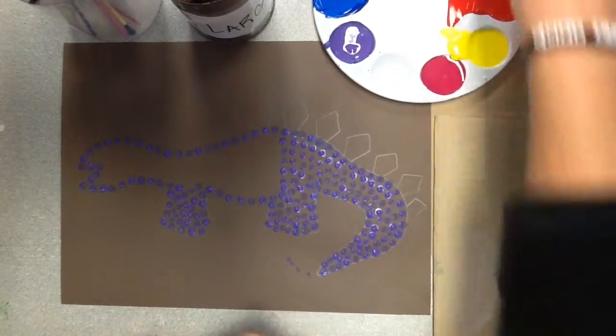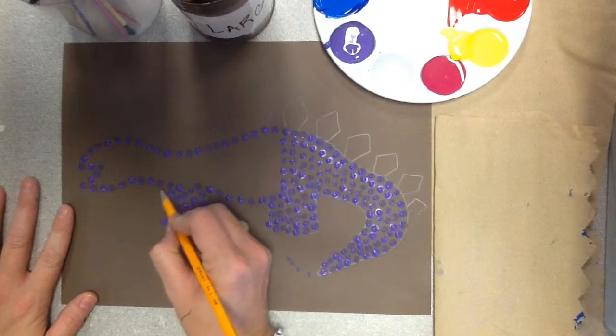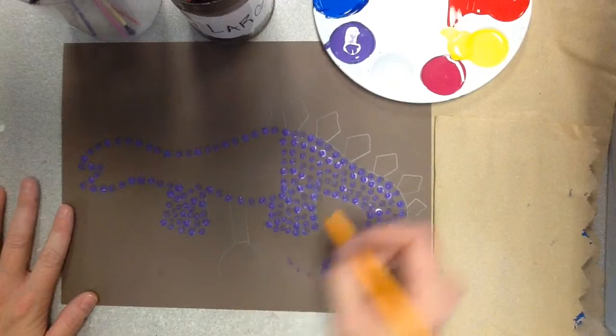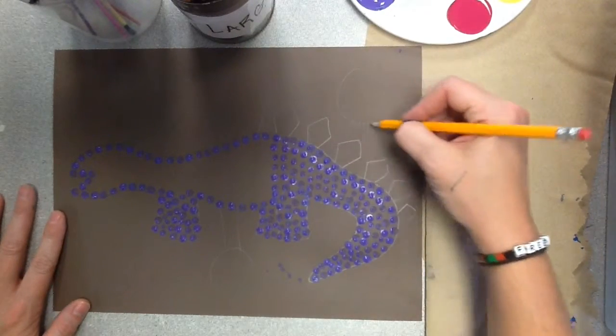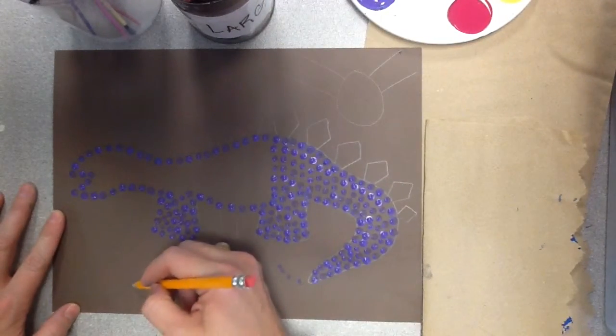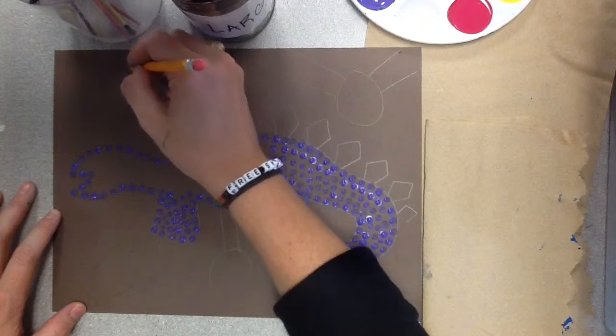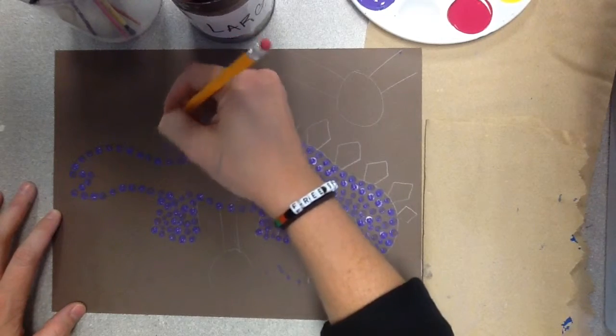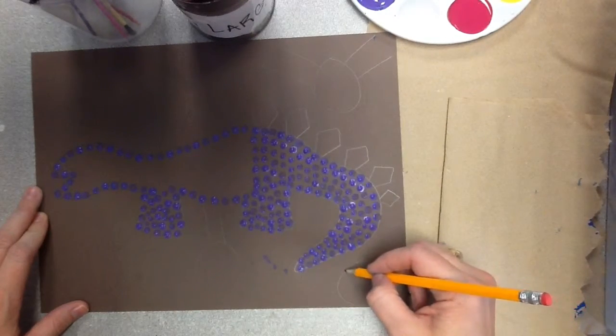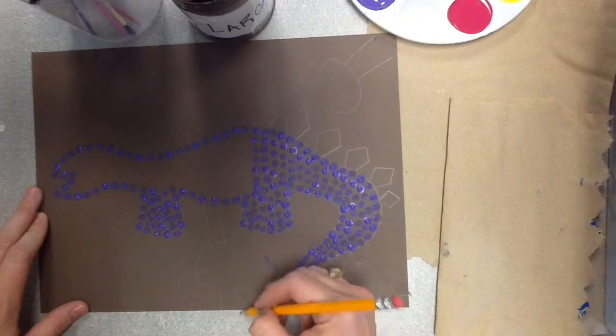For the background, you have some choices. You could go in here and draw like some shapes. This is something that I've seen a lot of Aboriginal art do before, where they have these shapes with these lines coming out of them.